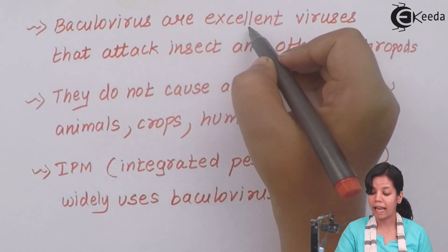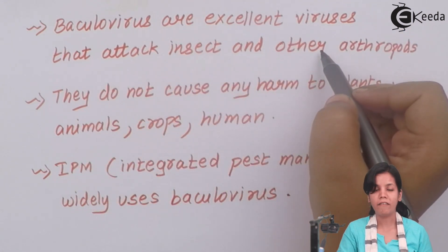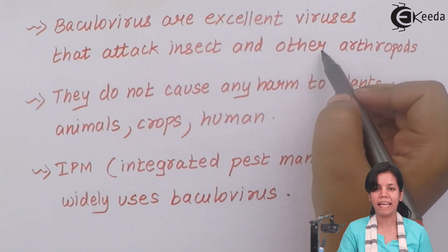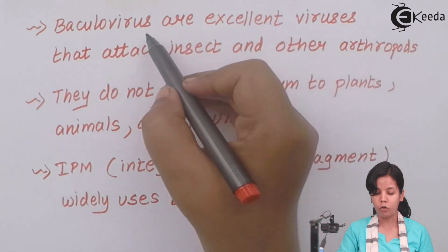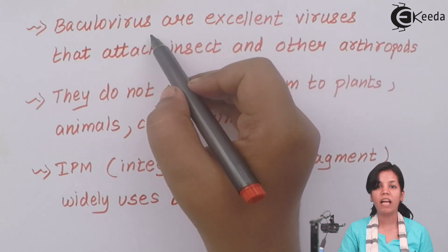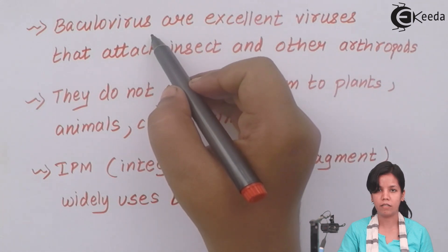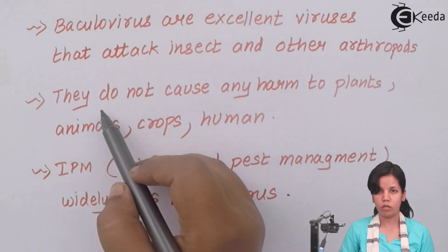Baculoviruses are excellent viruses that attack insects and other arthropods. They never cause any harm to plants, animals, birds, or crops — they only kill certain harmful arthropods. Baculoviruses are narrow-spectrum Bio-Control Agents; they have great affinity towards certain harmful RNA viruses and never cause any damage to plants or animals.